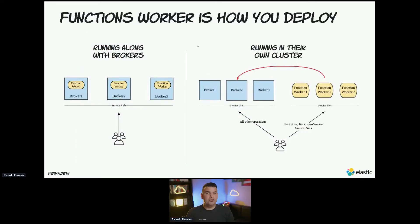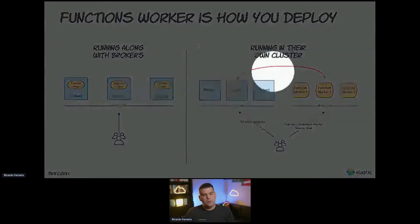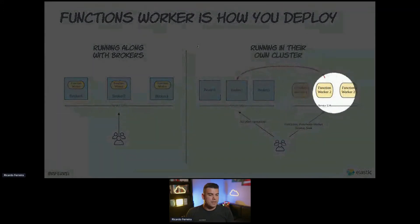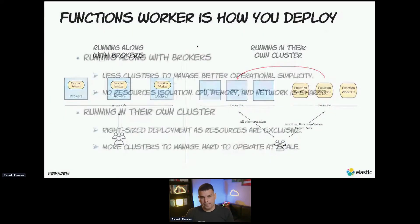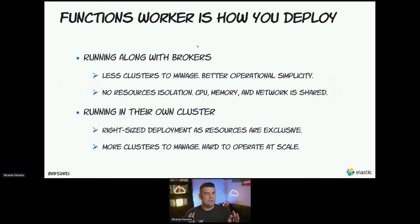Functions execute on top of something called a function worker. There are two ways to run a function worker: either side by side with your brokers — option number one, most common in development mode — or you can create your own cluster of function workers running alongside your brokers. Running along with the brokers has the advantage of fewer clusters to manage and simplicity, but the problem is you compete for CPU, memory, and network with what the broker has to do. Pulsar IO incurs a lot of CPU, memory, and network activity, so in production you want resource isolation.